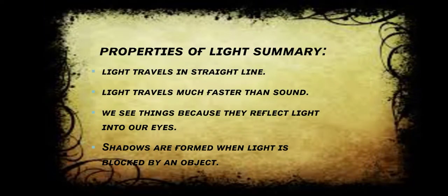Now let us talk about the properties of light in summary. Light travels in a straight line. Light travels much faster than sound. We see things because they reflect light into our eyes. Shadows are formed when light is blocked by an object.